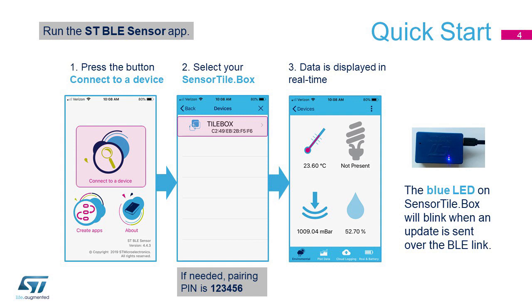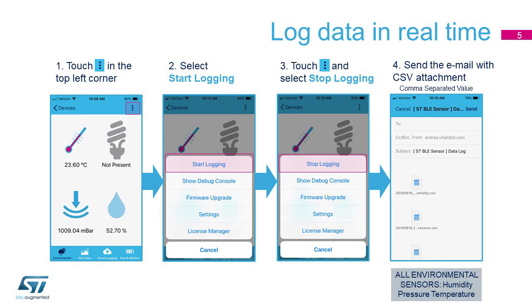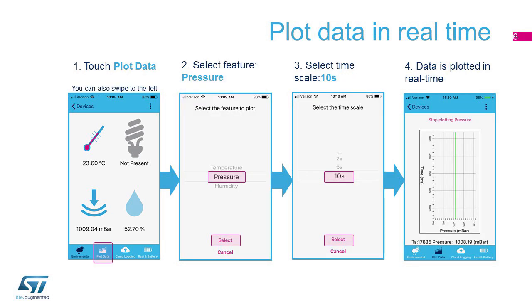Three of them will have readings just beneath them. These readings are the measurements done by your SensorTile.Box in real-time. Please note that the SensorTile.Box does not have a light sensor, so one icon is not enabled. The barometer application is running on the SensorTile.Box automatically, and you can check out the readings immediately. It is also possible to log the data on the phone. Click on the button with three dots on the top right corner. Hit the Start Logging menu item to start the data logging. Hit the Stop logging item when you want to stop. By swiping the screen to the left, you can also plot the data.